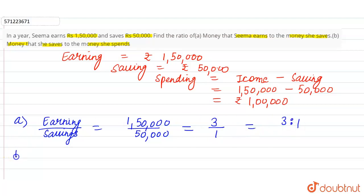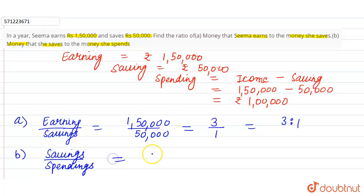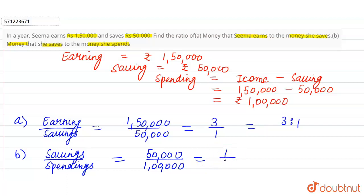For part B, the ratio of money she saves to the money she spends. Savings are fifty thousand and spending is one lakh. The common factor is fifty thousand, so fifty thousand is one and one lakh is two, giving us a ratio of one ratio two.